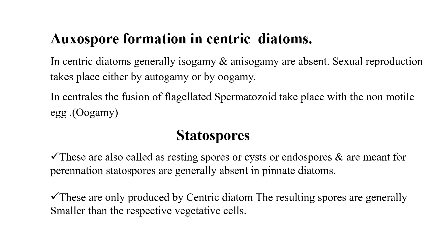There is another special type of spore formation in diatoms that does not take place in pennales — it takes place only in centric diatoms, which have radial symmetry. These are called statospores, also known as resting spores, cysts, or endospores, and are meant for perennation. Statospores are generally absent in pennate diatoms. The resulting spores are generally smaller than the respective vegetative cell. They can tide over unfavorable conditions and germinate to give rise to a new diatom cell.